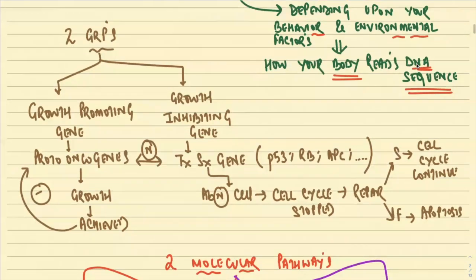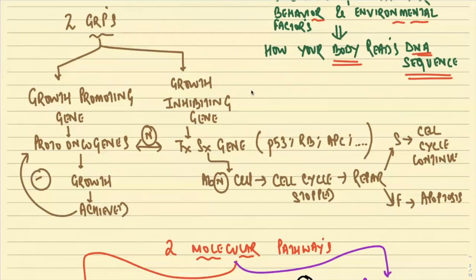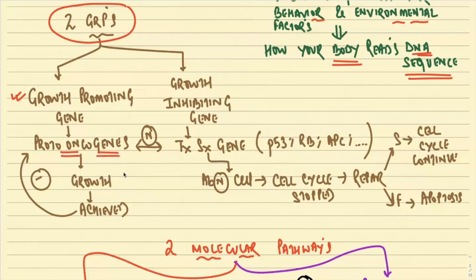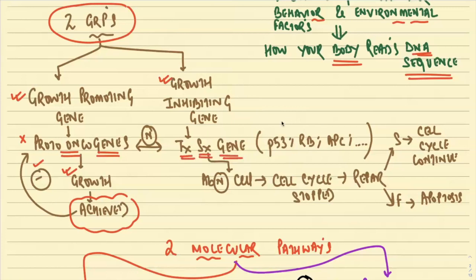Just remember: in our body, we have two groups of genes. One is a growth-promoting gene — the proto-oncogene — whose normal role is to stimulate growth and proliferation. Once growth and proliferation is achieved, there is negative feedback and the proto-oncogene is switched off. We also have growth-inhibiting genes called tumor suppressor genes — examples include P53, RB, and APC. Their normal function is to stop the cell cycle when encountering a cell with damaged DNA, stimulate repair, and trigger cell death if repair fails.